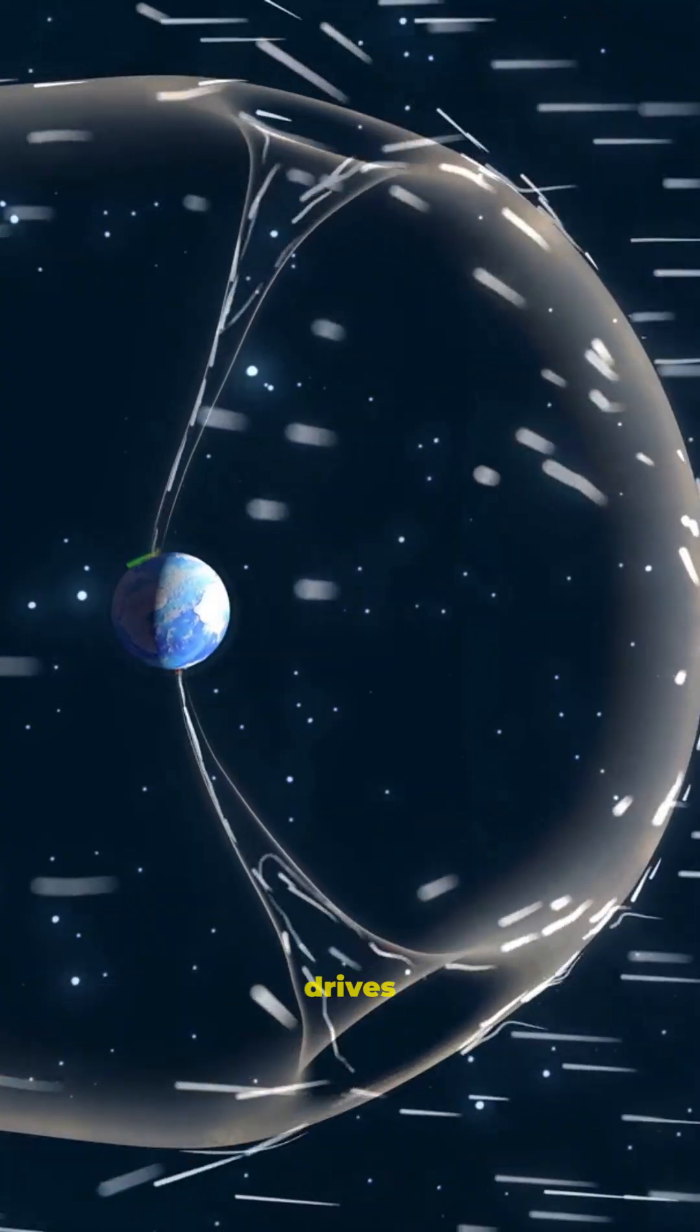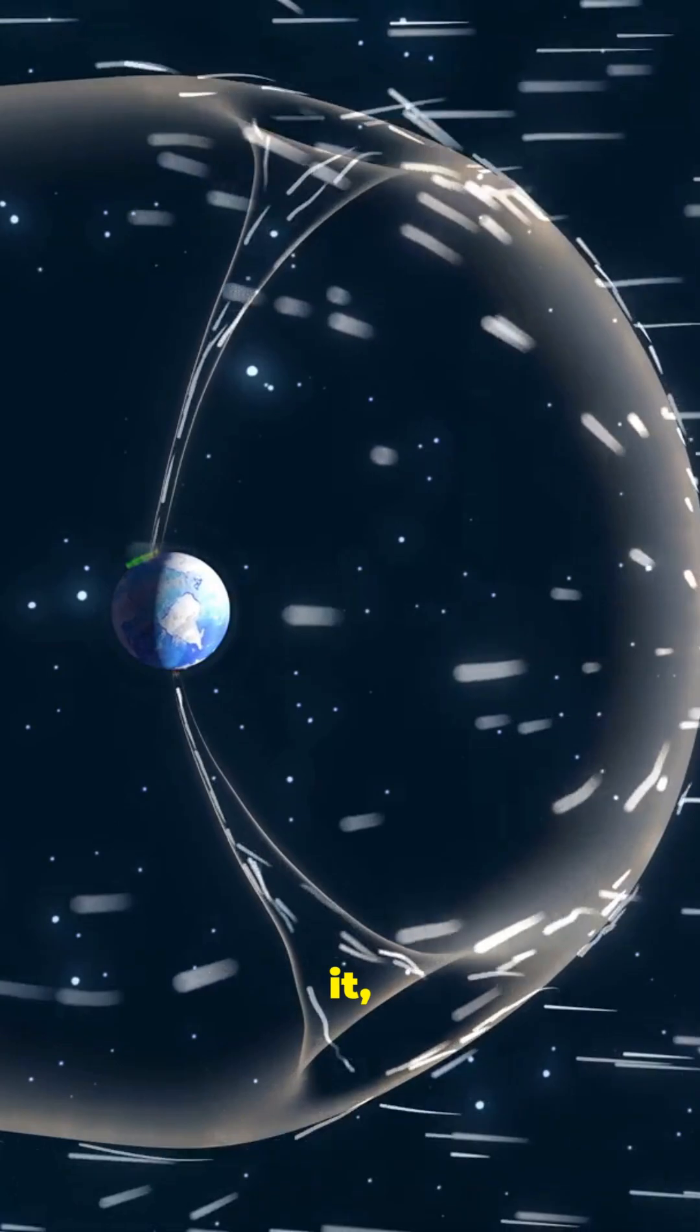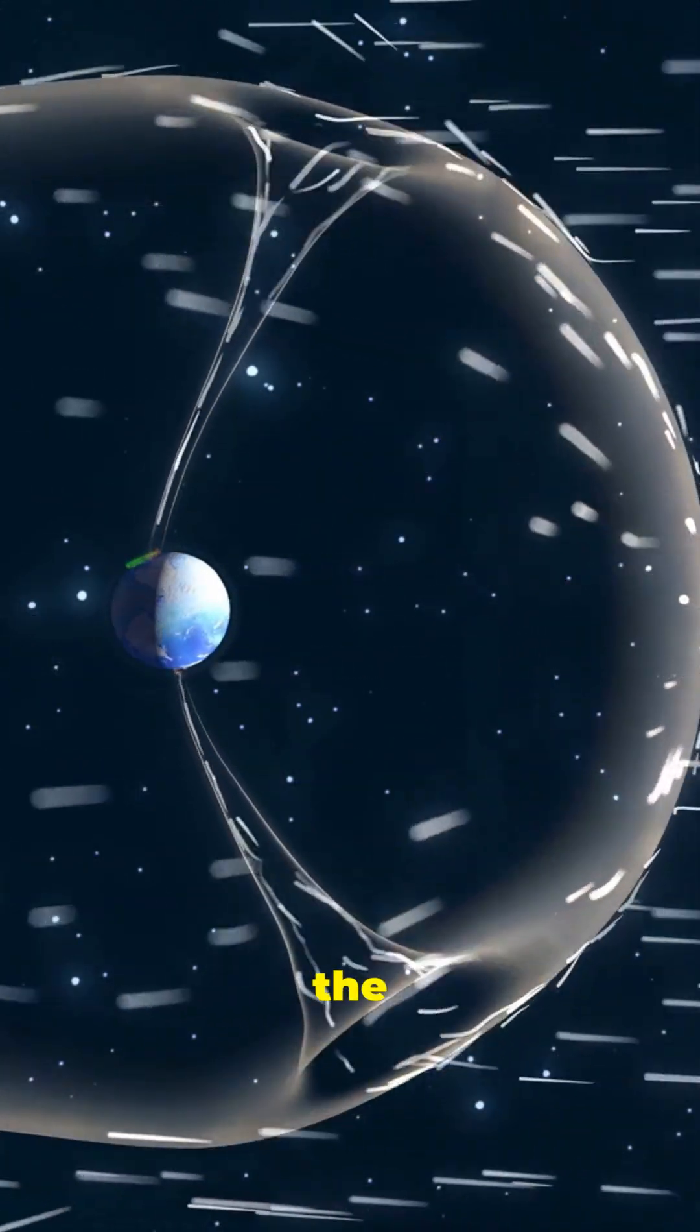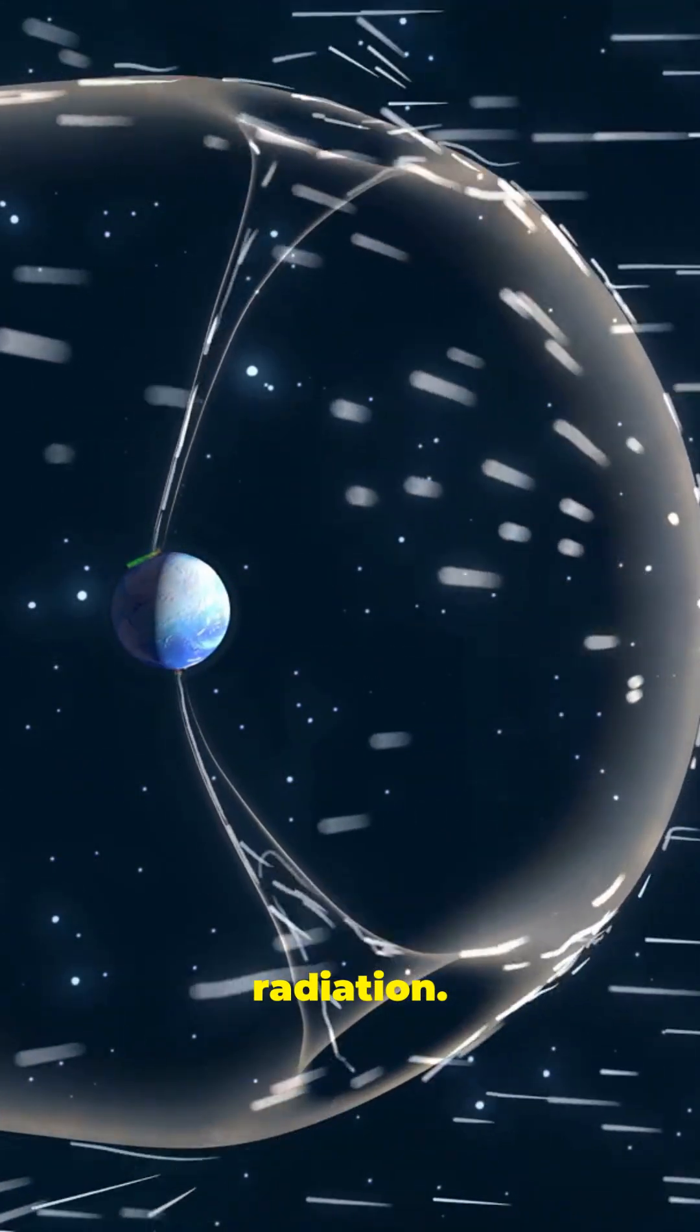Earth's spin drives its magnetic field. Without it, solar winds would strip away the atmosphere, exposing the surface to deadly radiation. Over time,